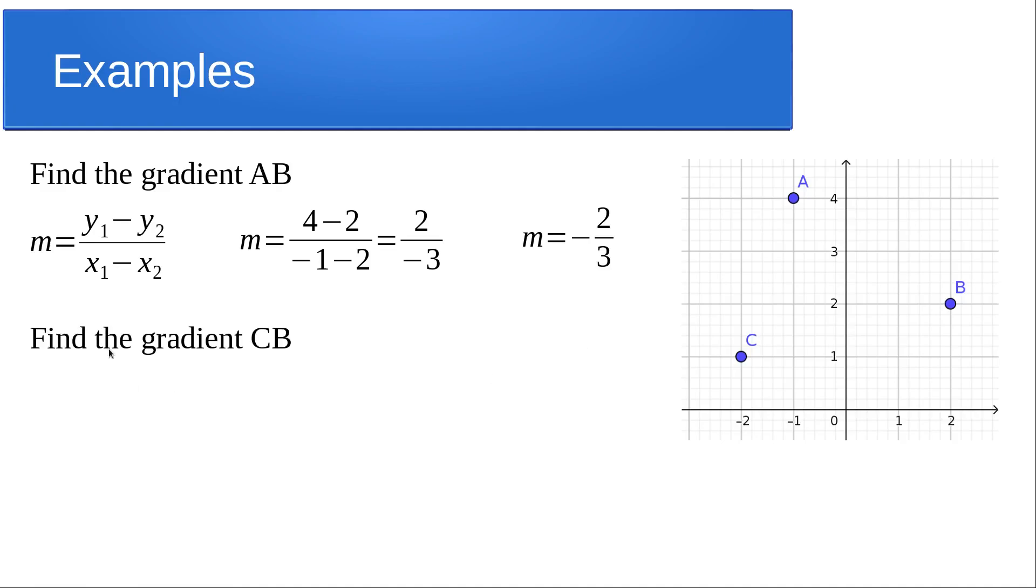For our next example, do the gradient of CB. C is going to be my X1, Y1. B is going to be my X2, Y2. You could do that the other way around, but that's just what I've chosen to do. We've got our standard formula.